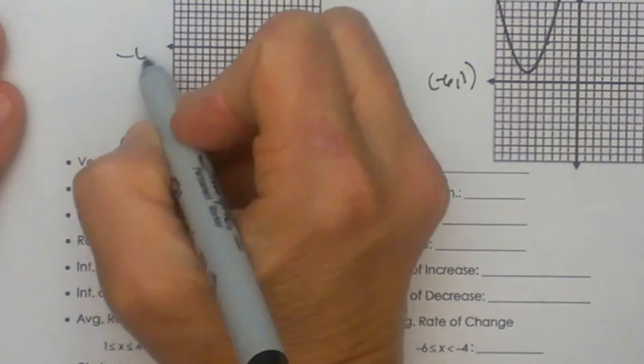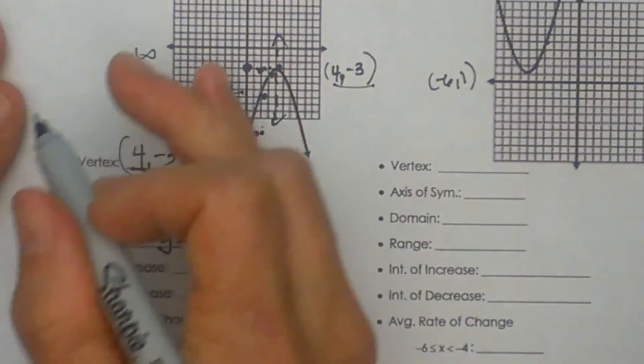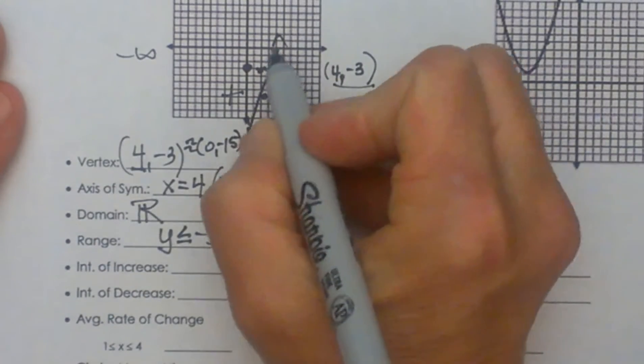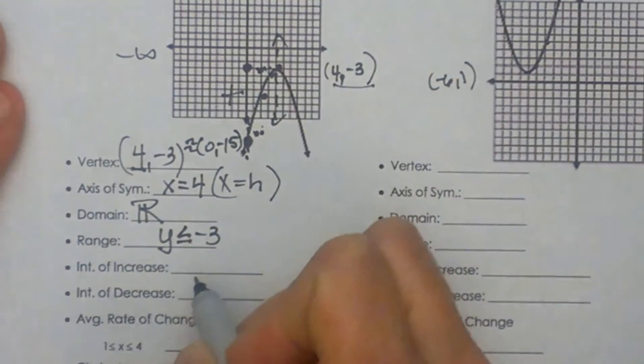So from negative infinity, so all these values over here all the way up to the vertex and the vertex is at 4, the interval increases. So from negative infinity up to 4.